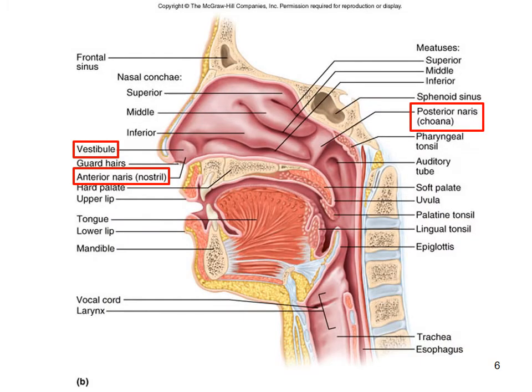In this illustration, I've highlighted the anterior nares — or nostrils — on the left-hand side, and on the right-hand side the posterior nares, which are the opening and ending of your nasal cavity. You can see the dilated chamber on the side where the vestibule is located.